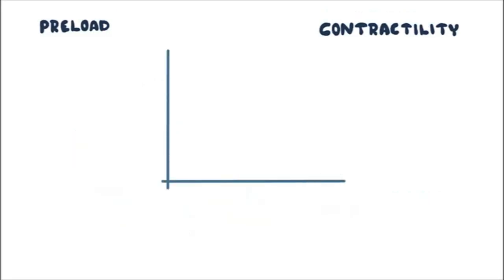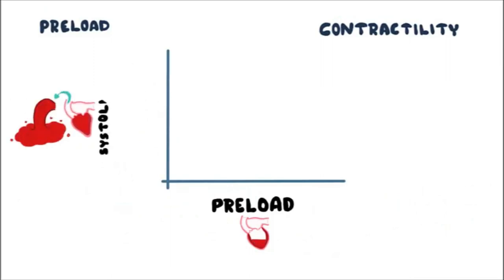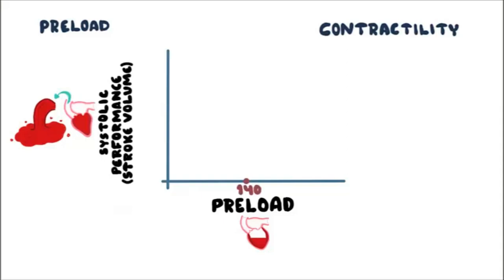On the x-axis we have ventricular preload, and on the y-axis we have systolic performance, which I will define as stroke volume. Suppose at rest the preload is 140 mL and stroke volume is 70 mL. This means the ventricle receives 70 mL and ejects 70 mL during systolic contraction. Under resting conditions, the ventricle operates at this point — let's refer to this as the control point.